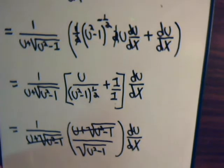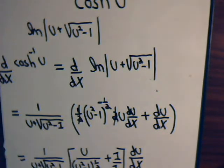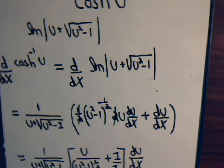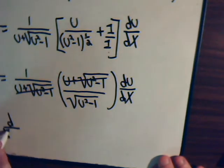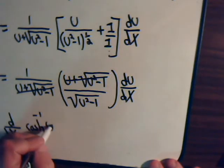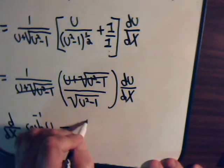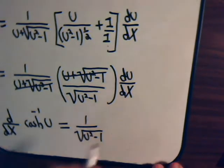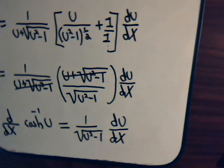So when we took the derivative of this logarithm, we got 1 over the square root of u squared minus 1 times du/dx, and that equals the derivative of the inverse hyperbolic cosine function. So the derivative d/dx of the inverse hyperbolic cosine of u equals 1 over the square root of u squared minus 1, times du/dx.